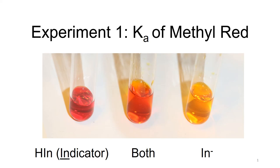Experiment number one: Ka of methyl red. In this experiment, we will determine the value of Ka of methyl red. What is Ka? A stands for acid, K stands for equilibrium constant. Ka stands for acid ionization equilibrium constant.